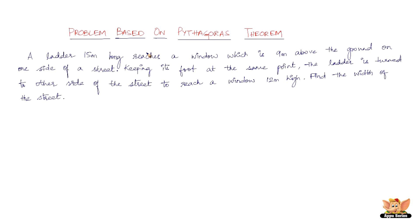In this video let us solve a problem based on Pythagoras theorem. The question reads: a ladder 15 meters long reaches a window which is 9 meters above the ground on one side of a street. Keeping its foot at the same point, the ladder is turned to the other side of the street to reach a window 12 meters high. Find the width of the street. Let us draw a diagram for this question.